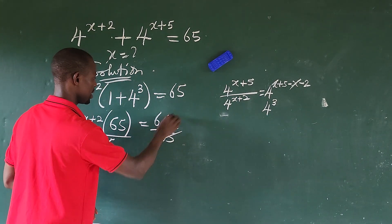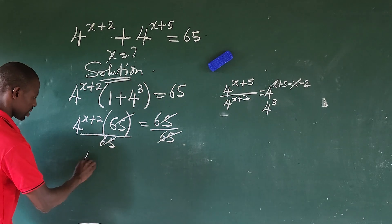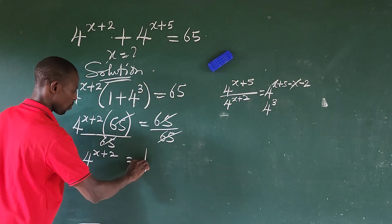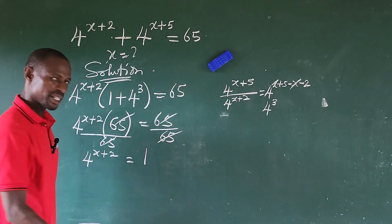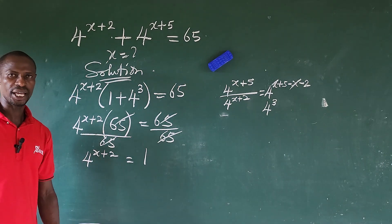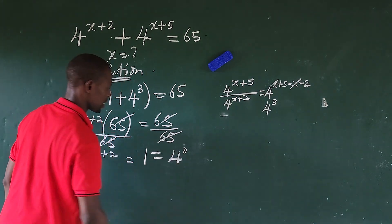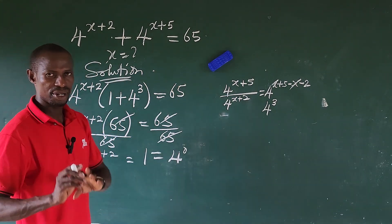This is equal to 65. Divide both sides by 65. This leaves 4 to the power of x plus 2 on the left side. Now, 4 to the power of x plus 2 is equal to what? This is base 4, so you can write this as equal to 4 to the power of 0.